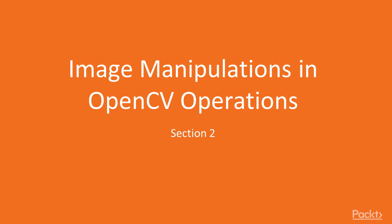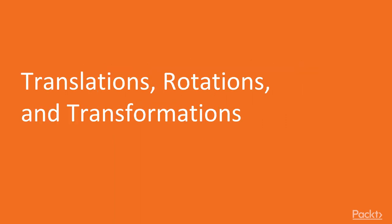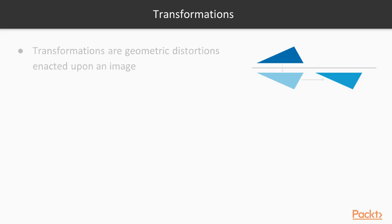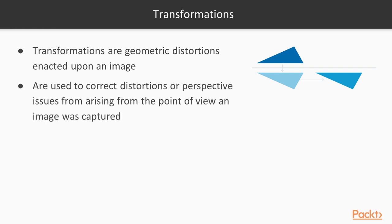Now let's start with something a bit more difficult - we're moving on to more complicated image manipulations and transformations, starting with translations and rotations. Transformations are geometric distortions enacted upon an image. They're used to correct distortions or perspective issues arising from the point of view at which the image was captured. Two main examples are affine and non-affine transformations.